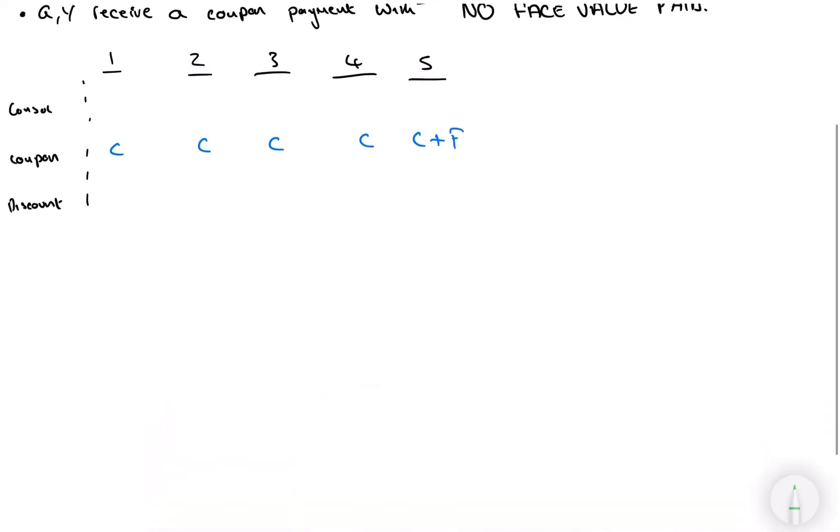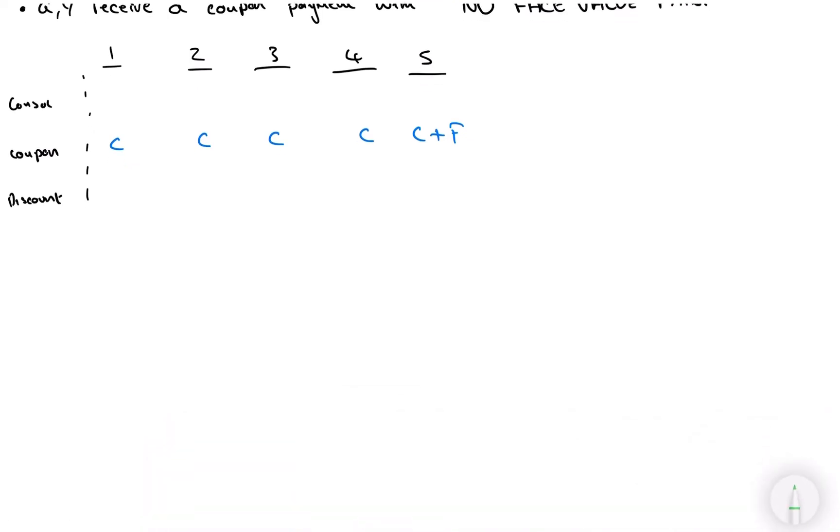So now for a discount bond, we have no coupon payments. All we have at maturity is the face value, also known as the future value, which would have been factored in depending on the time value of money.